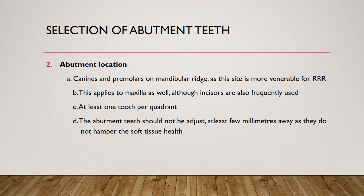The second selection criterion is abutment location — canines and premolars on the mandibular ridge, as this site is more vulnerable to resorption. Canines have the longest root, are the strongest teeth, and are the last to fall off. Premolars come next. These criteria apply to the maxilla as well, where incisors are also sometimes used, though less commonly.